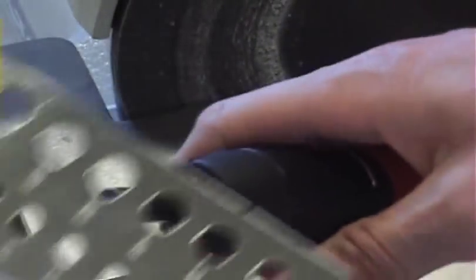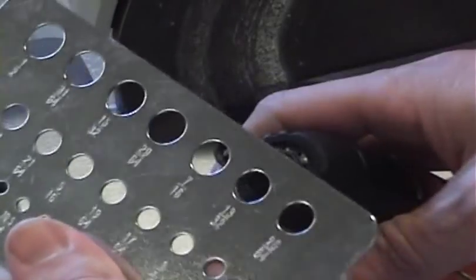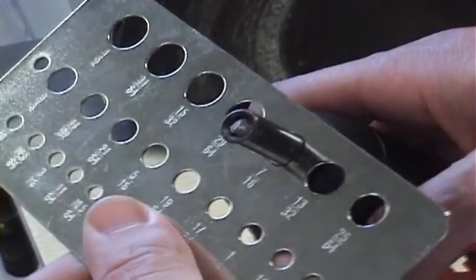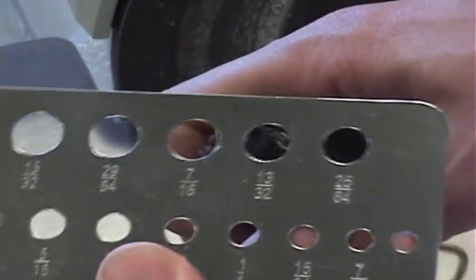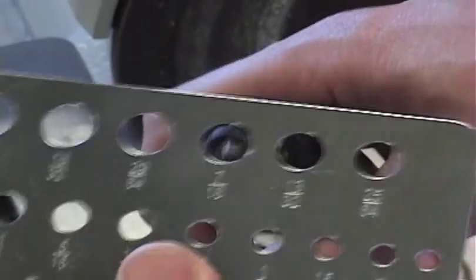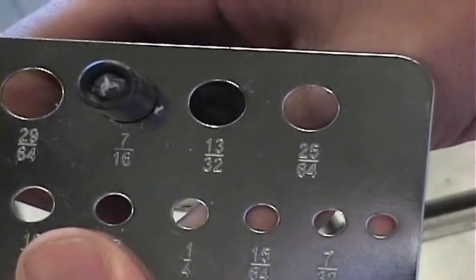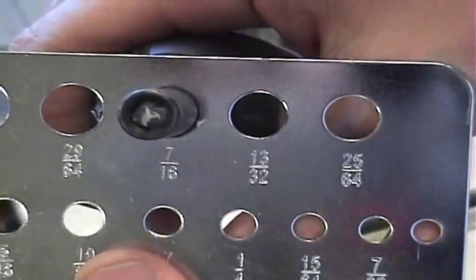To find the right size hole, you need to get one of these plates. It's a gauge that you can use to keep putting the motor through the holes until you find the smallest hole that will work. And that will be the drill size you use. For this particular motor, a 7/16ths drill bit should do the trick.